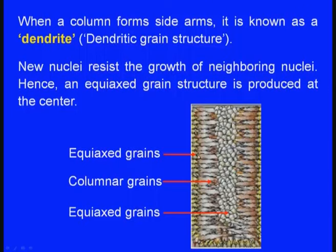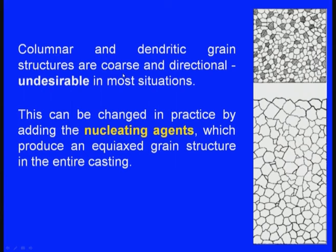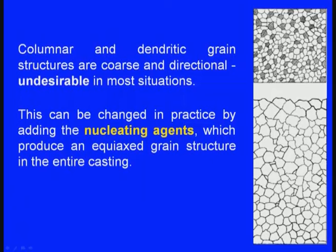So in a casting: at the beginning there are equiaxed grains, as solidification progresses there are columnar grains, and at the center there are equiaxed grains again. Columnar and dendritic structures are coarse, directional, and undesirable in most situations. What is desirable is an equiaxed grain structure. To change this, we need to control solidification by adding nucleating agents that produce equiaxed grain structure throughout the entire casting.